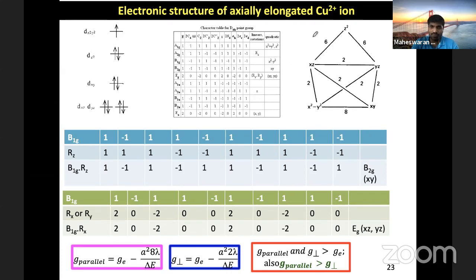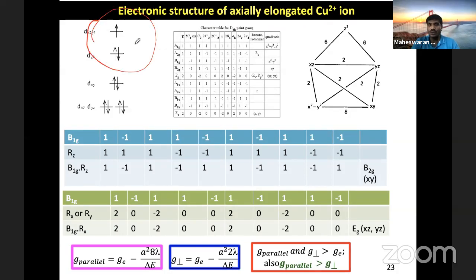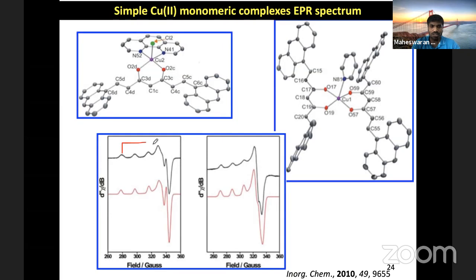For copper, when you work through the same approach, both G_parallel and G_perpendicular are larger than the free electron G value, and G_parallel is larger than G_perpendicular. This is a typical copper EPR spectrum. The G_parallel signal is seen here, and the G_perpendicular signal is here. Copper has a nuclear spin of 3/2, so each signal splits into four lines, giving more number of signals. Regarding the general rule: whenever an electronic transition goes from a filled orbital to an empty orbital, the G value will always be less than G_e. For transitions going to a half-filled configuration, the G value will always be greater than G_e.